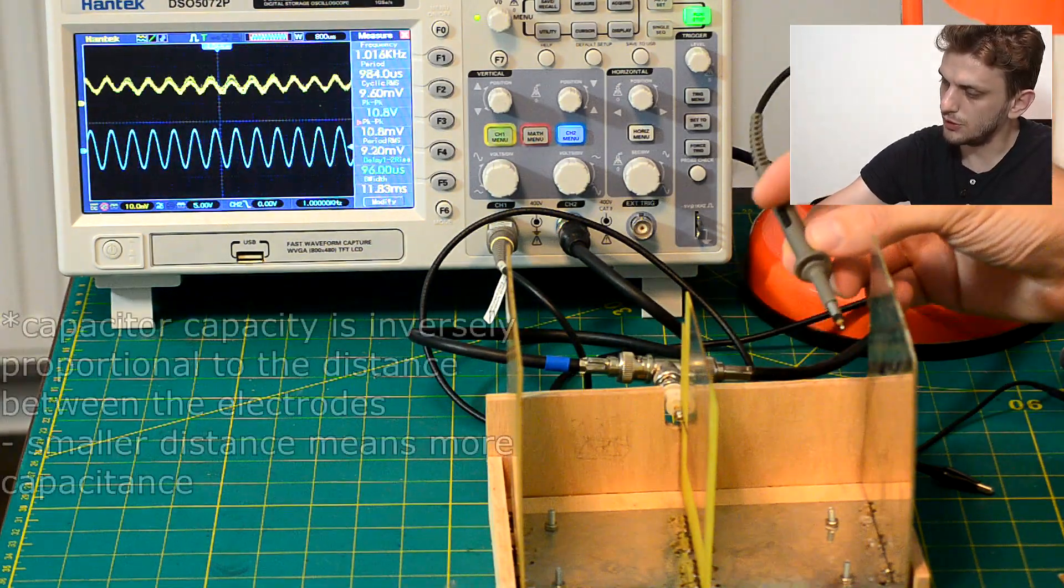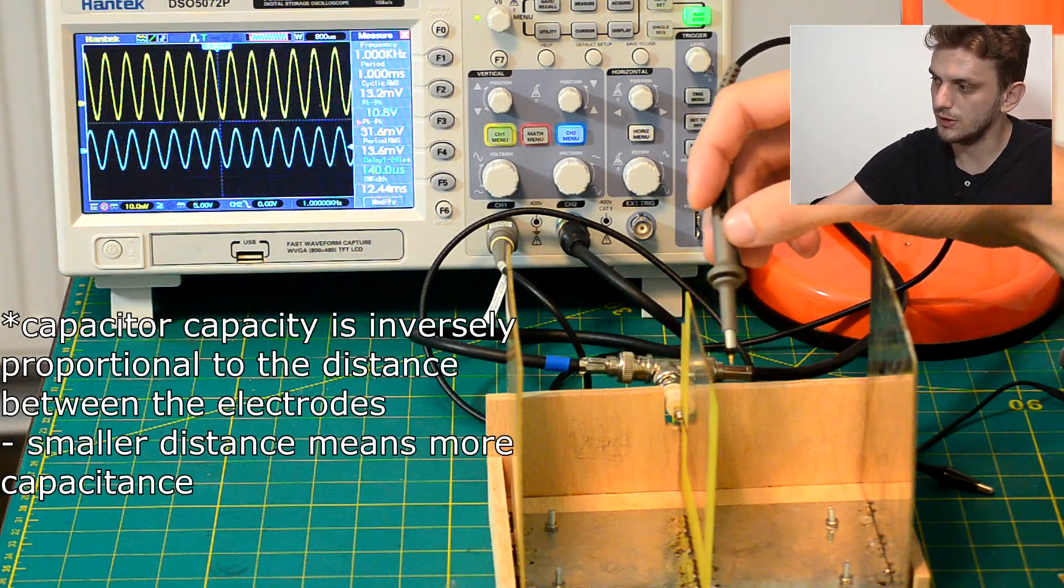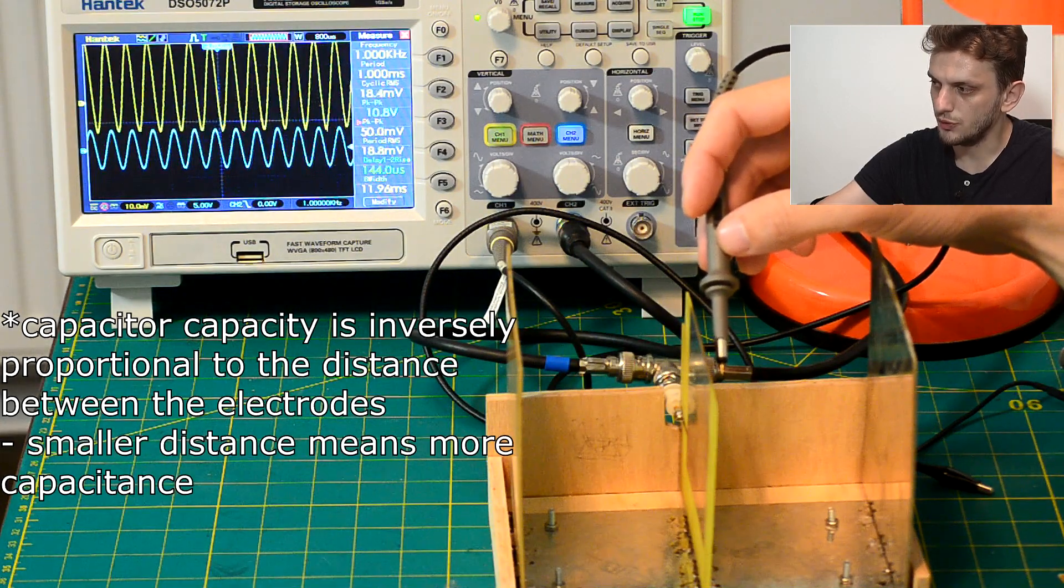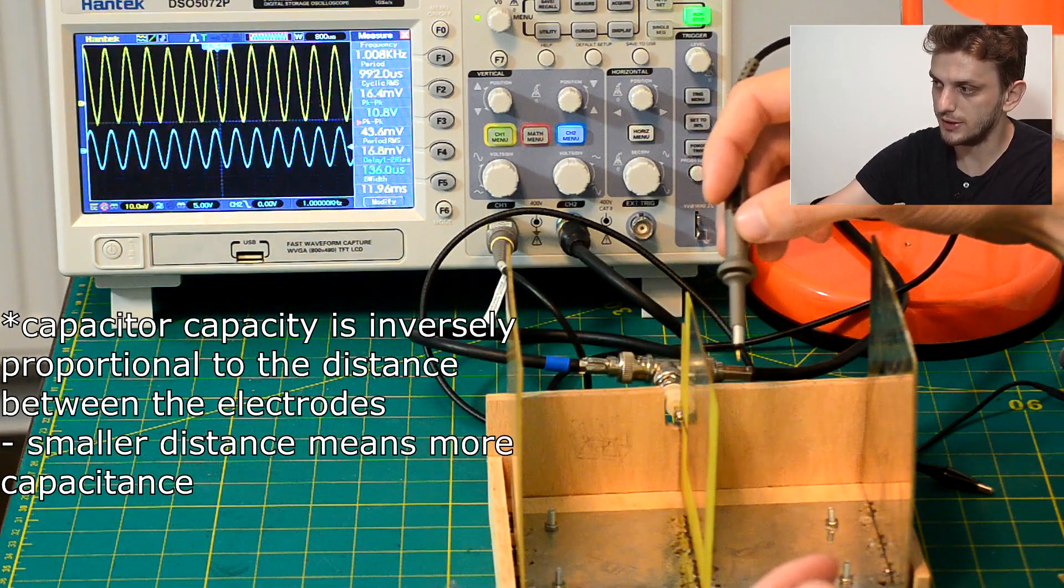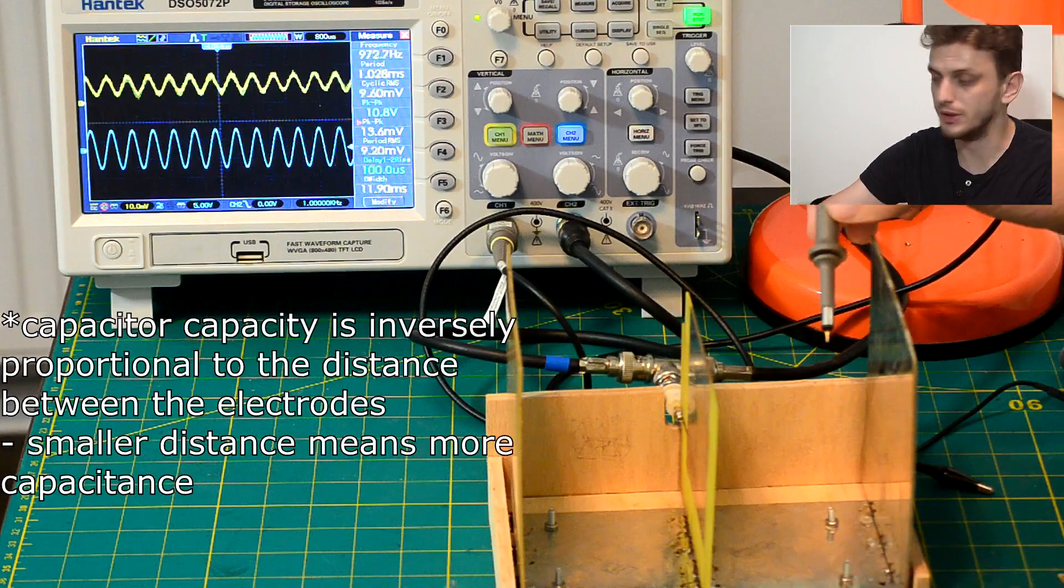So the smaller the distance between the terminals the stronger the signal so the closer I move to the live terminal the stronger my signal gets the further away the smaller it becomes.